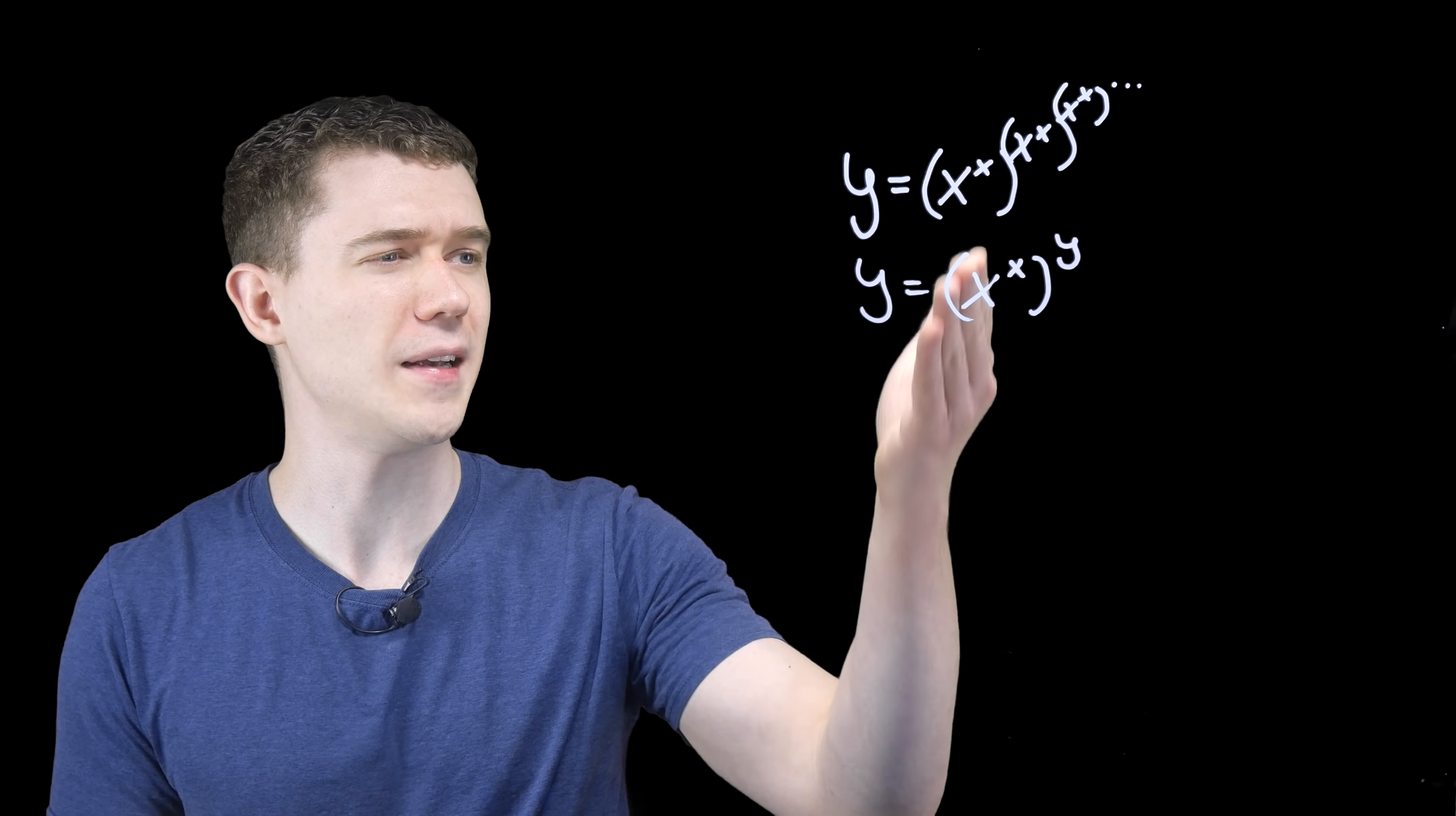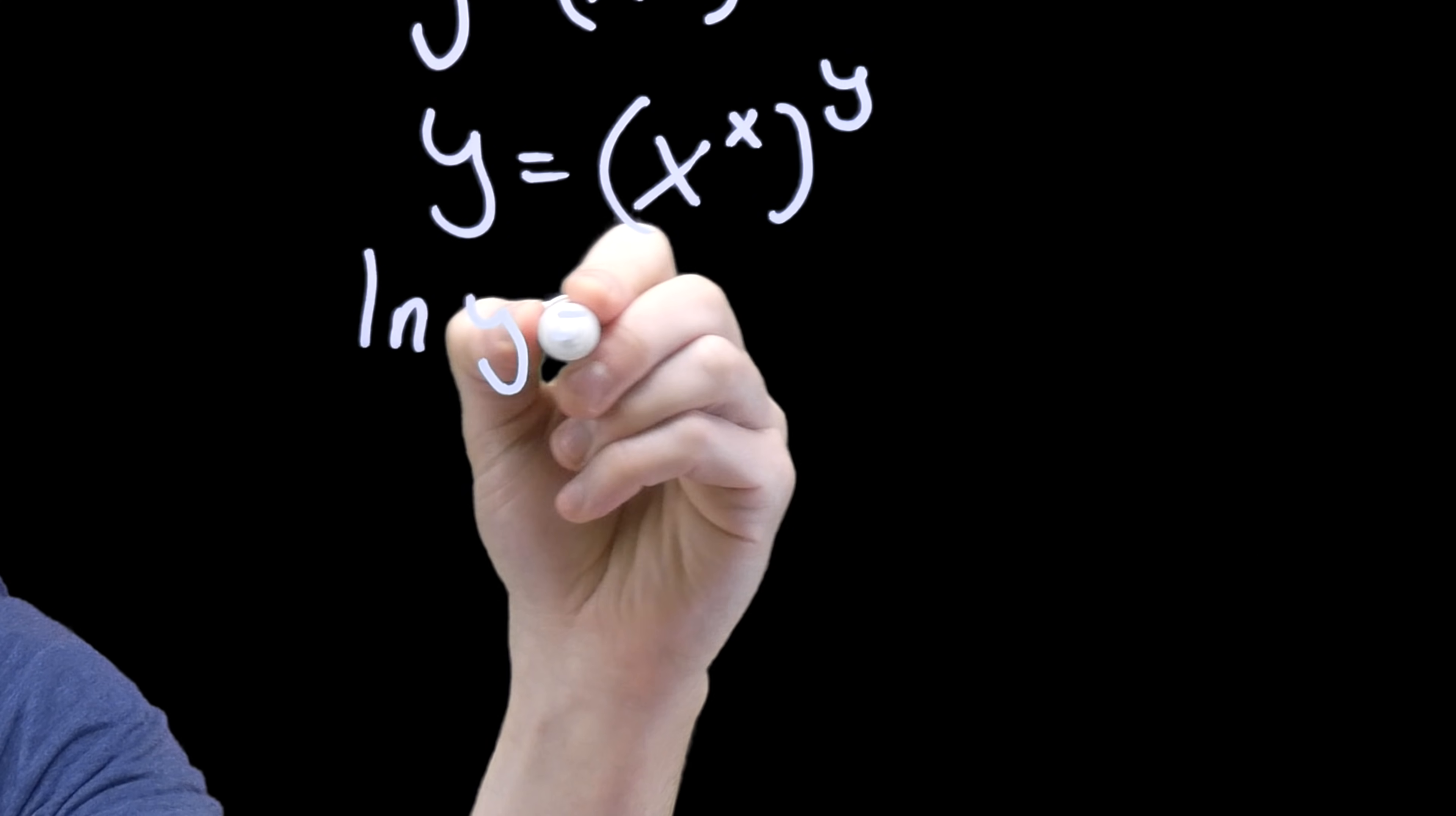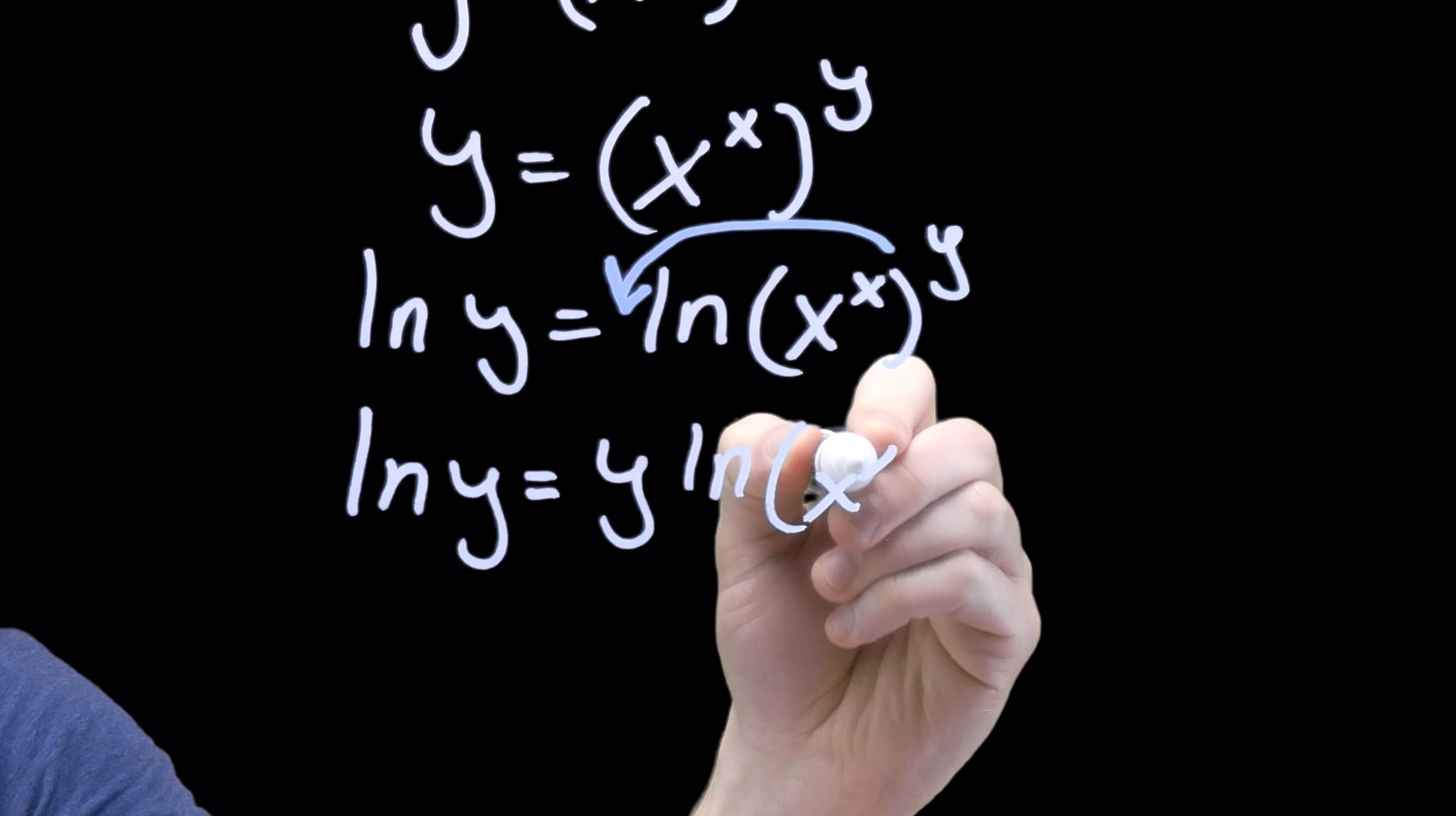It has this repetition pattern to it. We could keep substituting x to the x to the y in for y, and it would build this infinite tower. Writing it like this lets us take advantage of our properties of logarithms. Let's take the natural logarithm of both sides here. So ln of y equals ln of x to the x to the y. With properties of logarithms, we'll take this y down front. And this will be y natural log of x to the x.